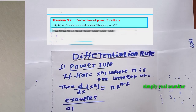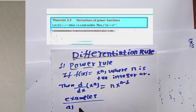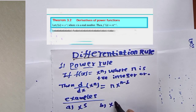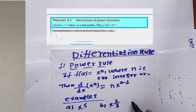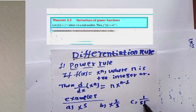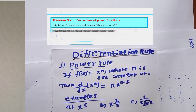Now let us solve some examples. Example a: x to the power of 5. Example b: x to the power of 2 over 3. Example c: 1 over the cube root of x squared.